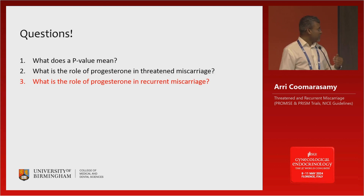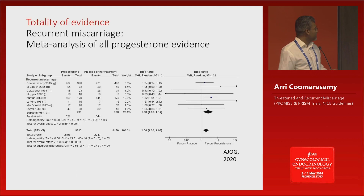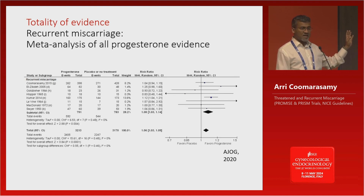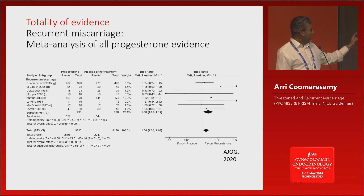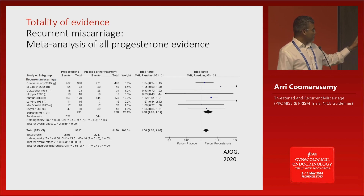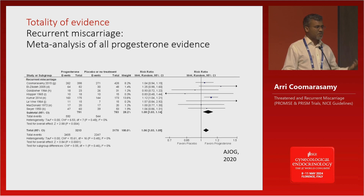Let's now move on to recurrent miscarriage — women who are not bleeding in early pregnancy but have had multiple miscarriages. When you look at the totality of evidence, most of the studies suggest an increase in live birth rate or ongoing pregnancy. When you look at the totality of evidence, there's an increase in live birth with statistical confidence — the confidence interval doesn't cross one. But again, this is a mixed bag: different progestogens, some studies aren't trustworthy, and there is a problem with the quality of evidence.